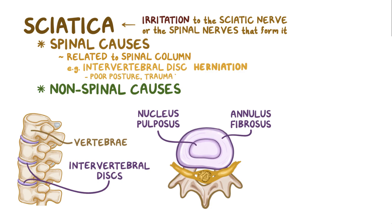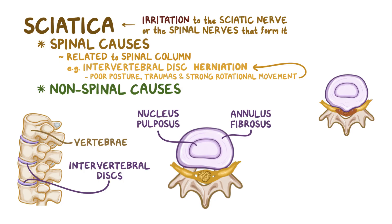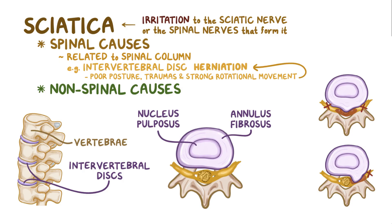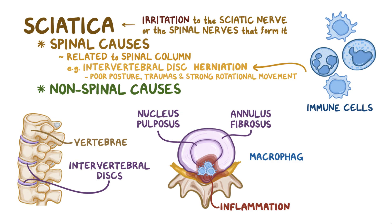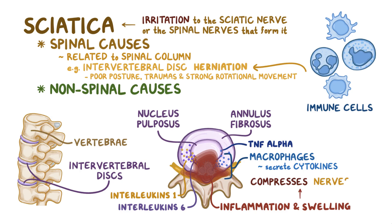Poor posture, traumas, physical activity, and strong rotational movement can cause herniation, where the disc bulges out in one direction. If it bulges towards the center of the spinal cord, it could compress multiple nerve roots on both sides, or laterally, compressing one nerve root on one side. In some cases, macrophages attack the nucleus pulposis and start secreting inflammatory cytokines like tumor necrosis factor alpha, interleukin-1, and interleukin-6. The inflammation and swelling which result from this reaction compress the nerves even further.